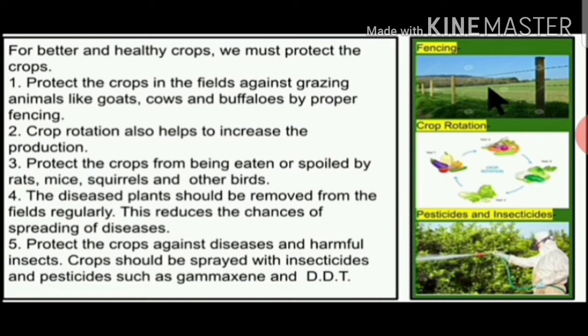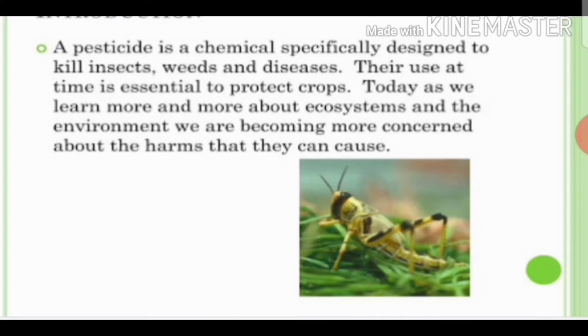Fifth, protect the crops against disease and harmful insects — crops should be sprayed with insecticides and pesticides such as Gamaxin and DDT. By following these steps we can protect the crops. Now, let us learn about the meaning of pesticides: a pesticide is a chemical specifically designed to kill insects, weeds, and diseases.